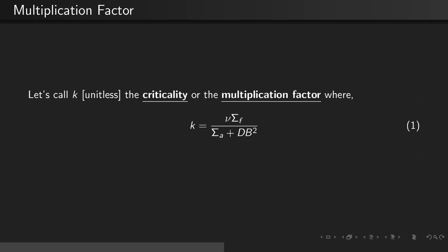Let's also define a unitless parameter k, which we'll call the criticality or the multiplication factor, such that k equals nu sigma F divided by the absorption cross-section plus the diffusion coefficient times the buckling squared.